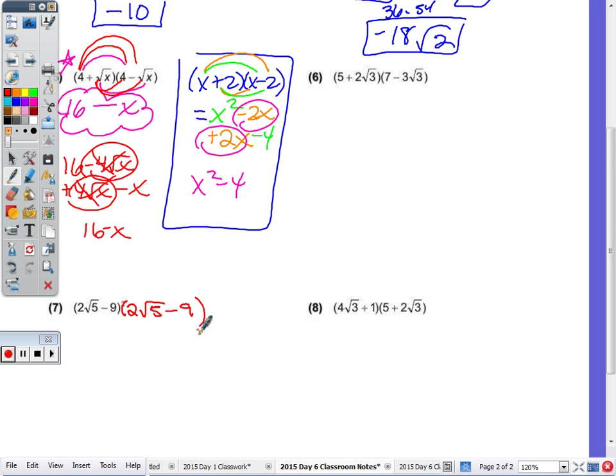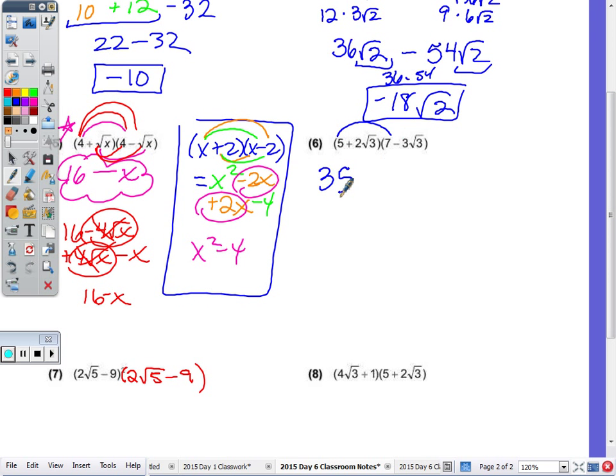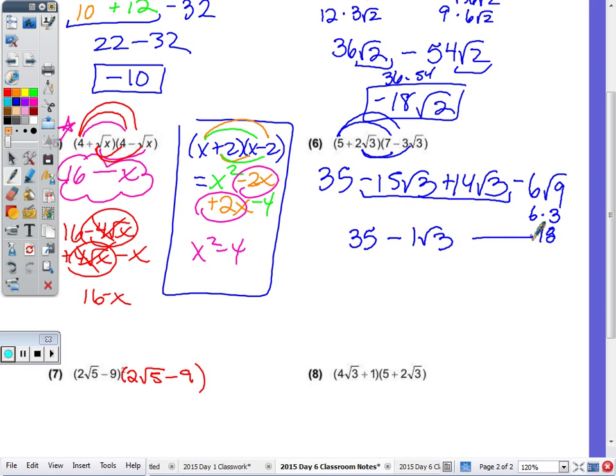So in 6, 5 times 7 is 35, there's no radical. 5 times negative 3 radical 3 is negative 15 radical 3. Inside would be 14 radical 3. Last would be negative 6 square root of 9, which would just be 3. So 3 times 6 is 18 at the end. You can combine these two. So we have 35 minus 1 radical 3 minus the 18. 35 minus 18? 17 minus radical 3.